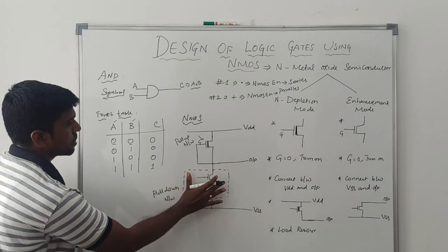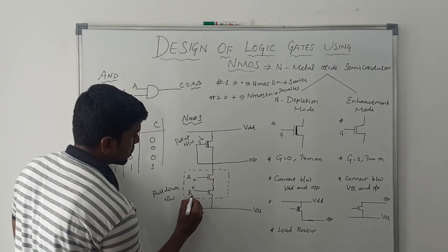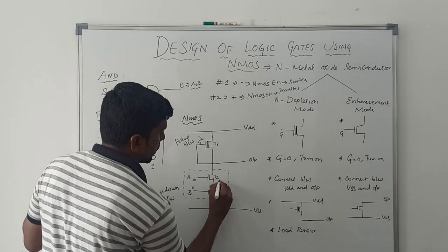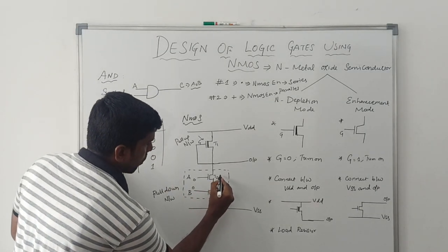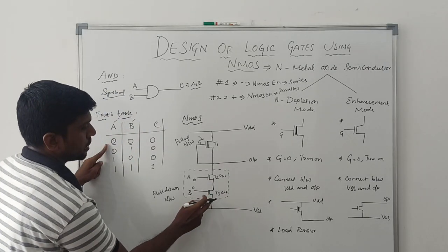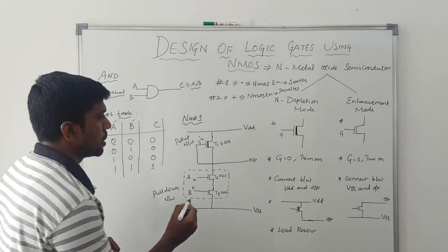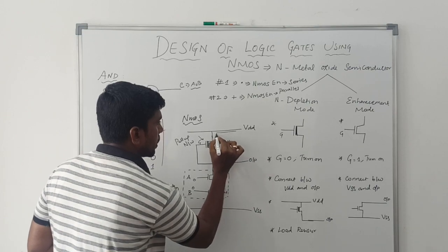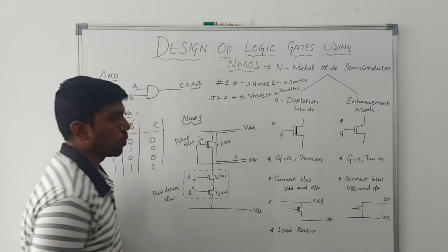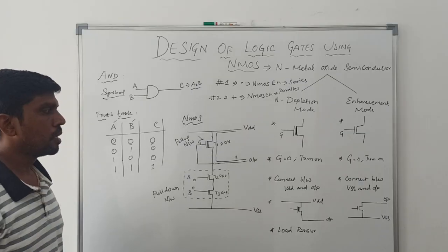Now I verify the output of this circuit with the truth table. When A equals 0 and B equals 0, both transistors T2 and T3 are turned off. T1, the depletion mode transistor, is always on, so VDD is connected to the output. The output of this circuit is 1. But the actual expected output is 0. So this circuit provides output 1, which is incorrect — what we need to do here is insert one inverter.